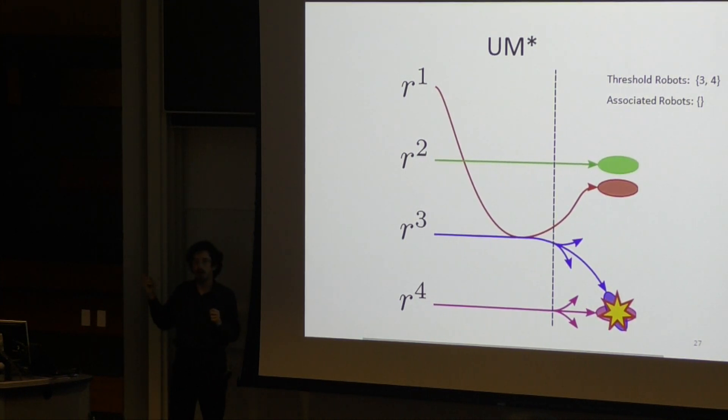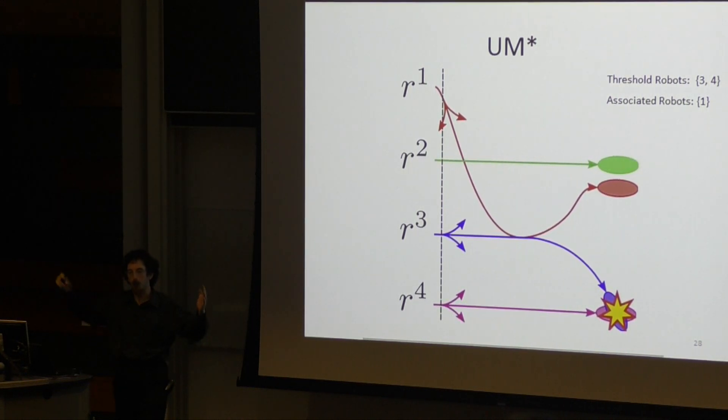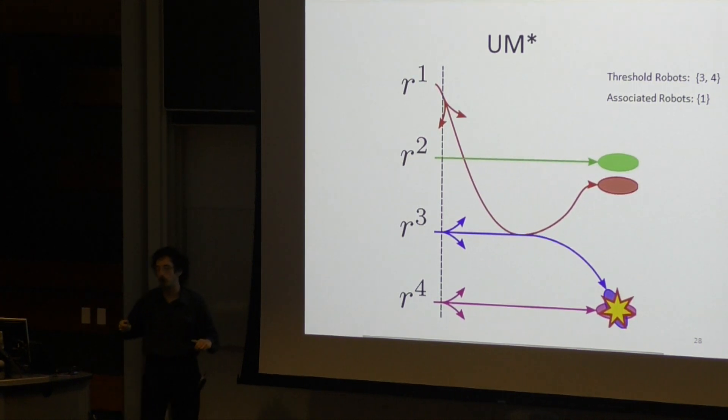But if that doesn't work out and we have to back up even further, we now see that robot 3 will have interacted with robot 1 along this trajectory between where we are replanning and where the constraint violation happened. So to try to resolve that constraint, we also have to consider alternate actions for robot 1.